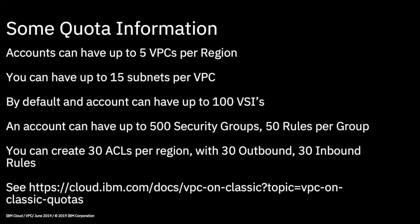There are a few limitations on VPC worth noting. Accounts can have up to five VPCs per region, and you can have up to 15 subnets in your VPCs, allowing for quite a complex network architecture. The account default is up to 100 virtual server instances within an account — if you think you'll hit that limit, you can request IBM Cloud support to have it raised.